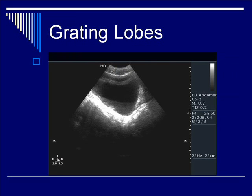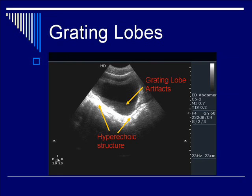Recall from our previous discussion of slice thickness artifact under the resolution section of this lecture that grating lobes were an alternative explanation for hypoechoic fluid within the bladder. In this case, we know that you need a hypoechoic structure as an initiating factor to facilitate the grating lobes. Grating lobe artifacts are shown here as hypoechoic fluid within the bladder, which in real life is not real.